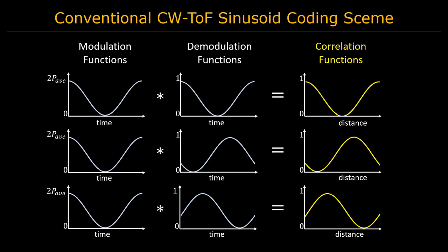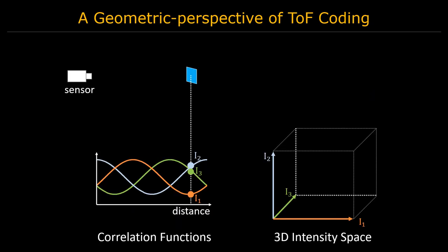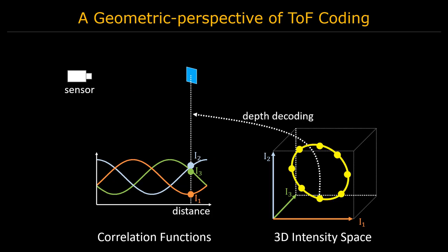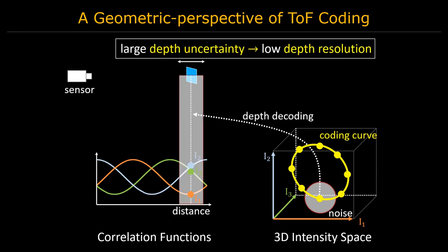Most current time-of-flight cameras use sinusoid coding, where both modulation and demodulation signals are phase-shifted sinusoids. The correlation functions are also sinusoids. We have developed a geometric framework for analyzing the performance of time-of-flight coding schemes. For a valid coding scheme, the correlation functions will parametrize a closed curve in the k-dimensional intensity space. We call this the coding curve. Using the abstract view of the coding curve, we can show that, in the presence of noise, traditional sinusoid coding achieves low depth resolution.